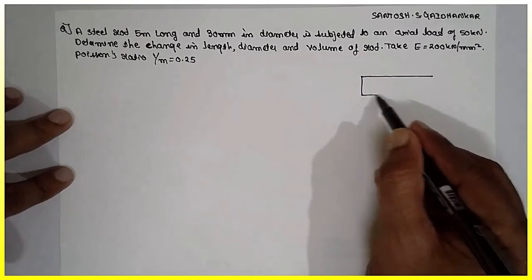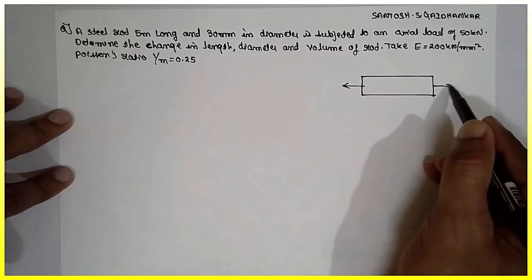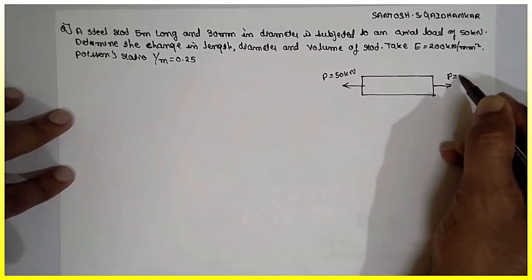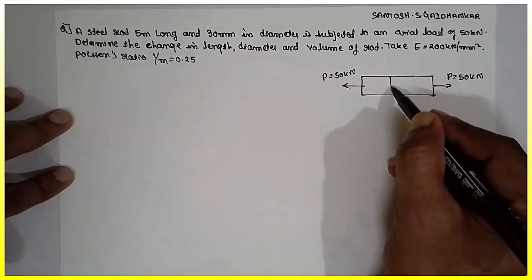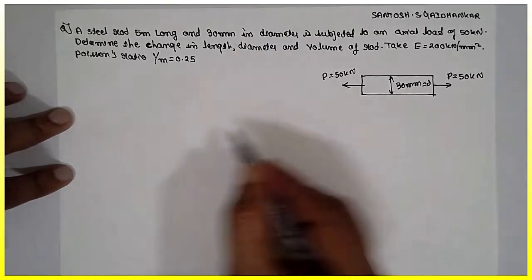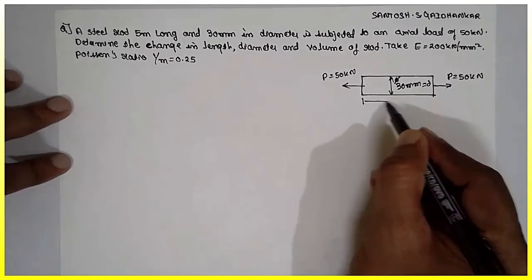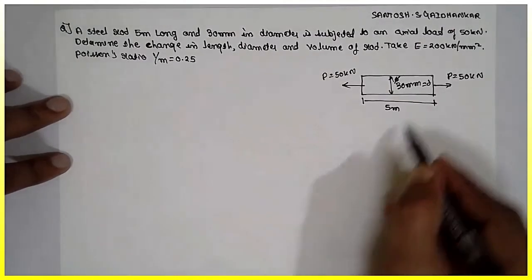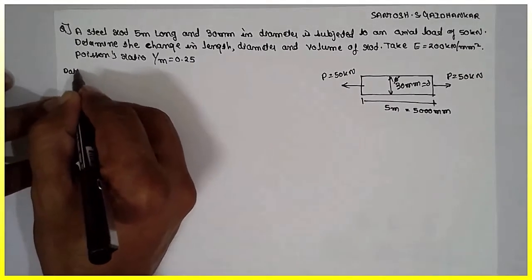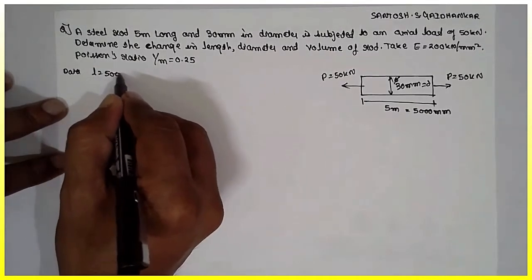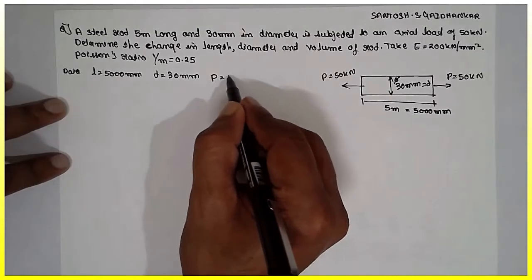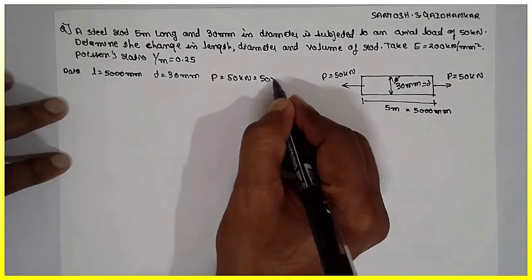A cylindrical rod is subjected to an axial load P equal to 50 kN, that is 50 × 10³ Newtons. Diameter is given as 30 mm. The length is 5 meters; if you convert into mm, it will be 5000 mm.